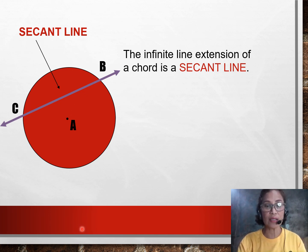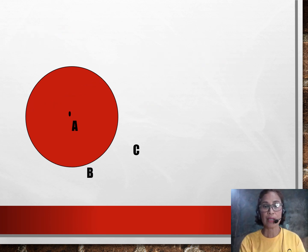This now will be named as line CB. Remember, it has a different symbol affixed on top of CB because it's already now a line. There is a chord here which is Segment CB.